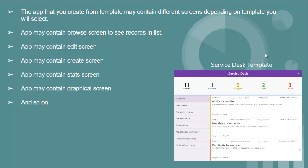The app you create from template may contain different screens depending on the template you select. There are three ways to create an app: from data, from blank, and from template. When using from data, you typically get three screens: browse, detail, and edit. When creating from blank you have no screens and must create each one yourself. With create from template, the number of screens depends on the template — it may include browse, edit, create, stats, and graphical screens.